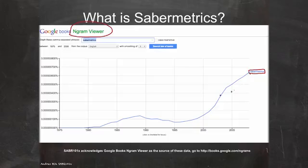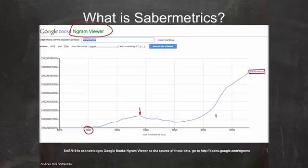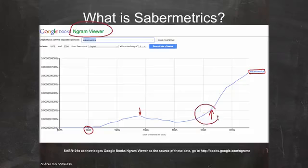The word started appearing in 1980 with increasing use through the '80s. This point is where Bill James stops writing his baseball abstracts, and usage seems to fade for a while before rebounding. Moneyball the book was published in 2003, which is right about here, but the increase in sabermetrics usage actually begins before that — though there's clearly an increase after it as well. It might be interesting to consider hypotheses around what was driving the increase in word usage inside books.